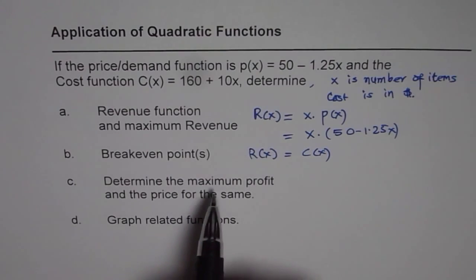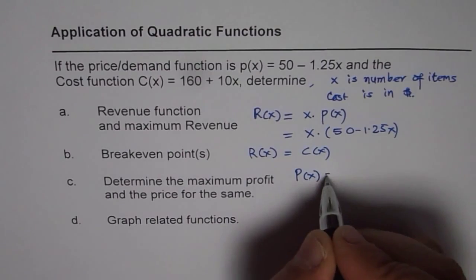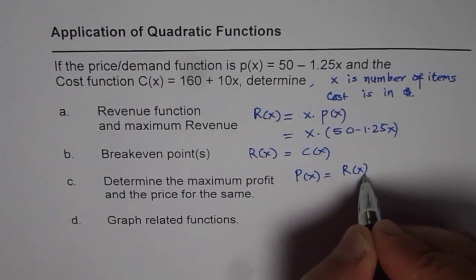Part C is determine the maximum profit. So first thing is what is profit function. Profit is revenue minus cost.